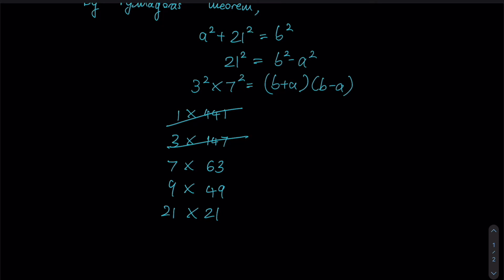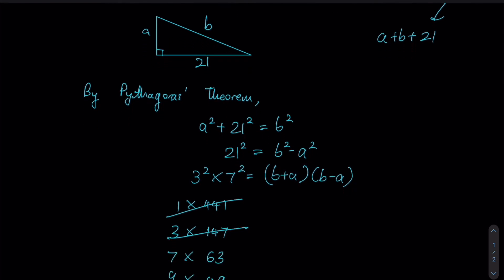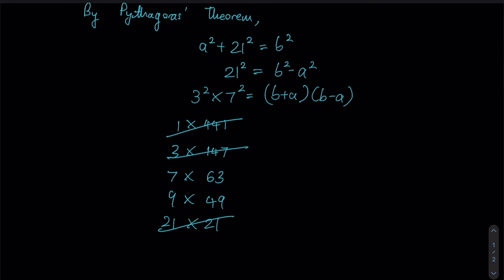Now we have three possible candidates. If we were to look at our last row first, this implies that b + a is 21 and that b - a is 21 as well, which would imply that a in turn must be 0, which wouldn't make sense in the context of this question because a is the length of this side and the length of this side can't definitely be 0. Therefore, the last one is out as well, leaving us with 7 × 63 as well as 9 × 49.